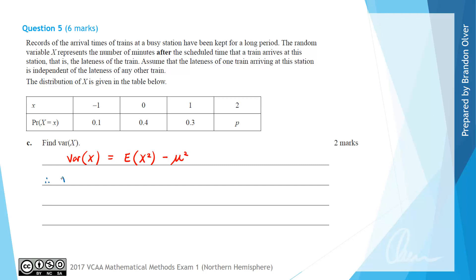So therefore the variance of X is going to equal, and then we square X before multiplying by its probability to get E of X squared. So we're going to have negative 1 squared times 0.1 plus 0 squared times